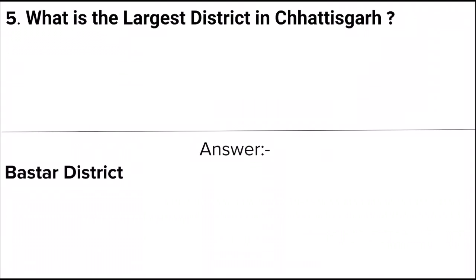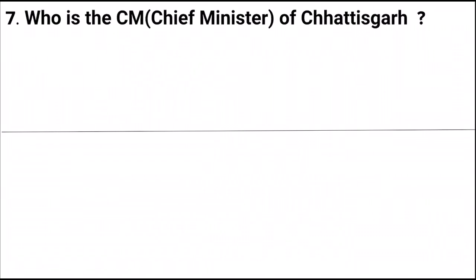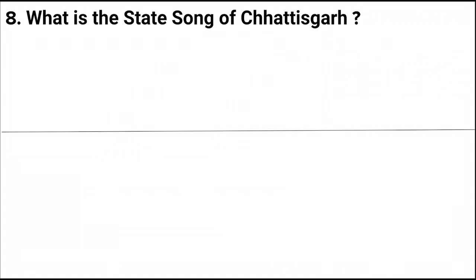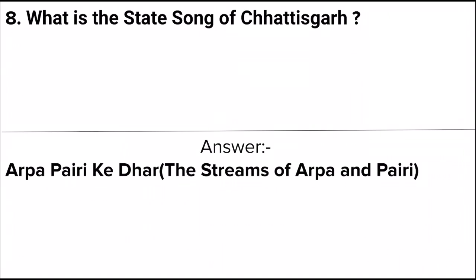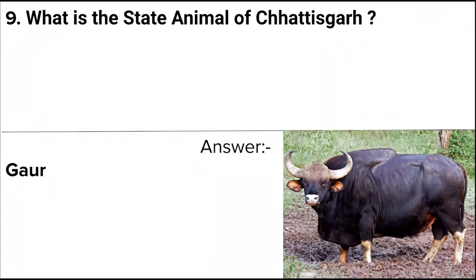Next question: What is the largest district in Chhattisgarh? Answer: Bastar district. Next question: Chhattisgarh was also known as? Answer: Kosala. Next question: Who is the Chief Minister of Chhattisgarh? Answer: Bhupesh Baghel. Next question: What is the state song of Chhattisgarh? Answer: Arpa Pairi, which means the streams of Arpa and Pairi.